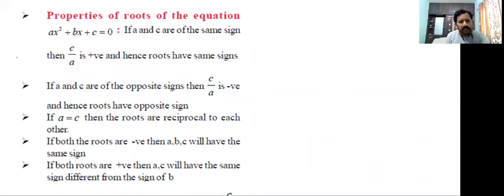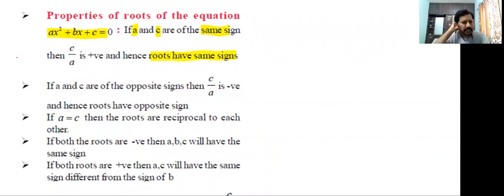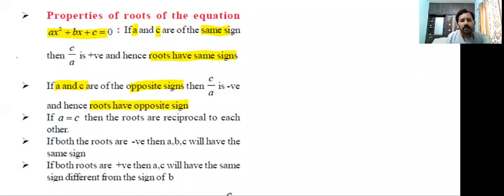Properties of roots of the equation ax² + bx + c = 0. If a and c have the same sign, then the roots also have the same sign. If a and c have opposite signs, then the roots have opposite signs.